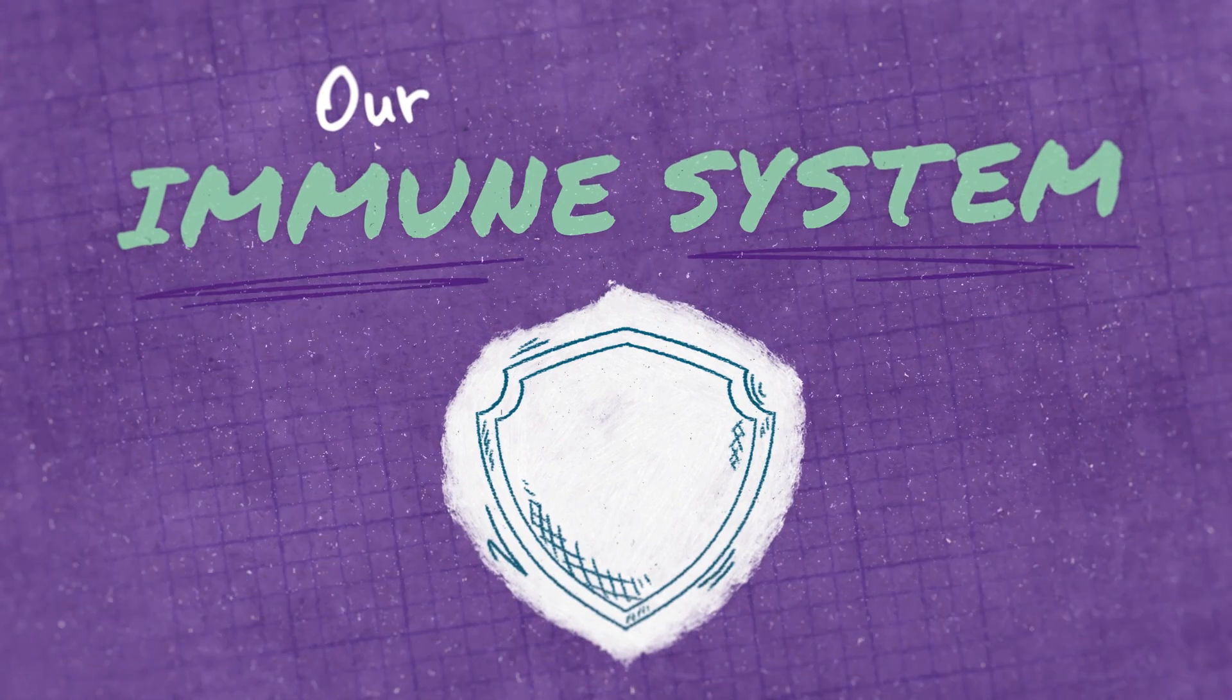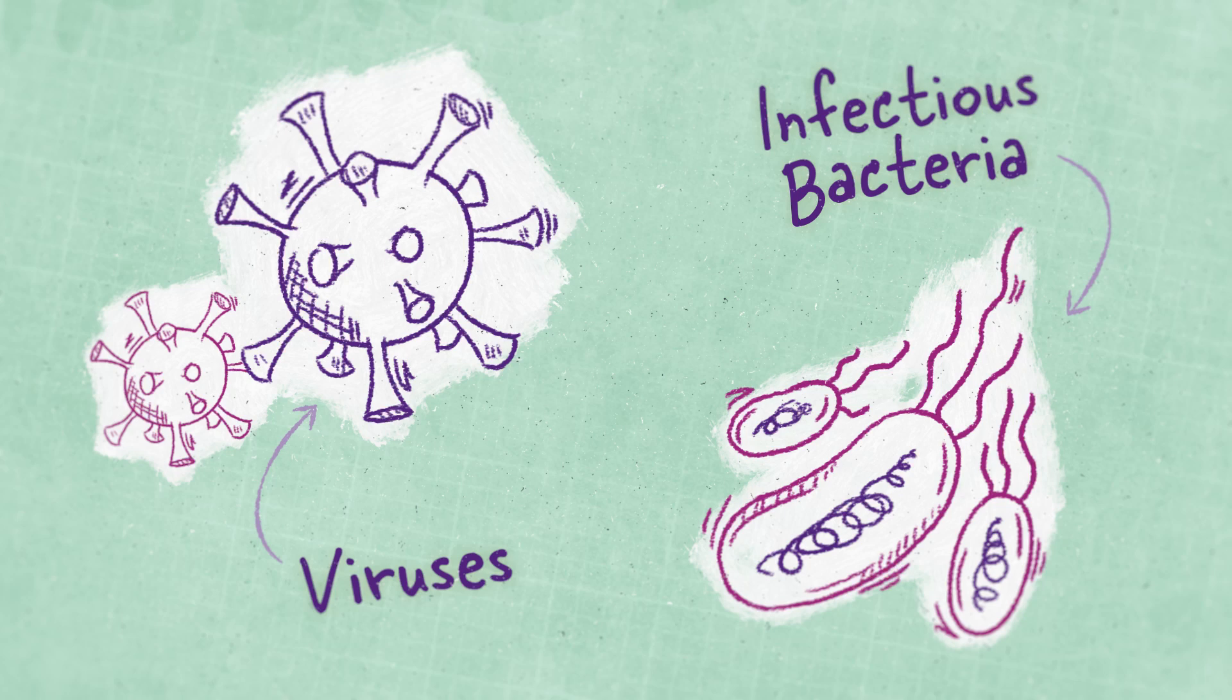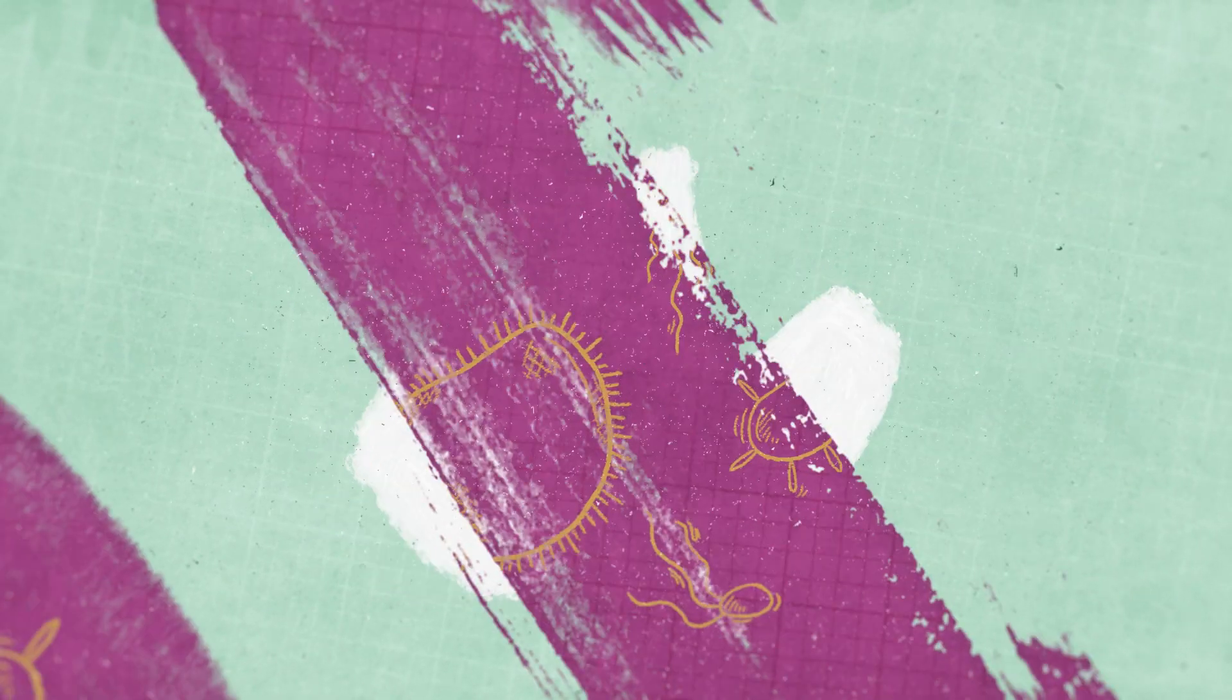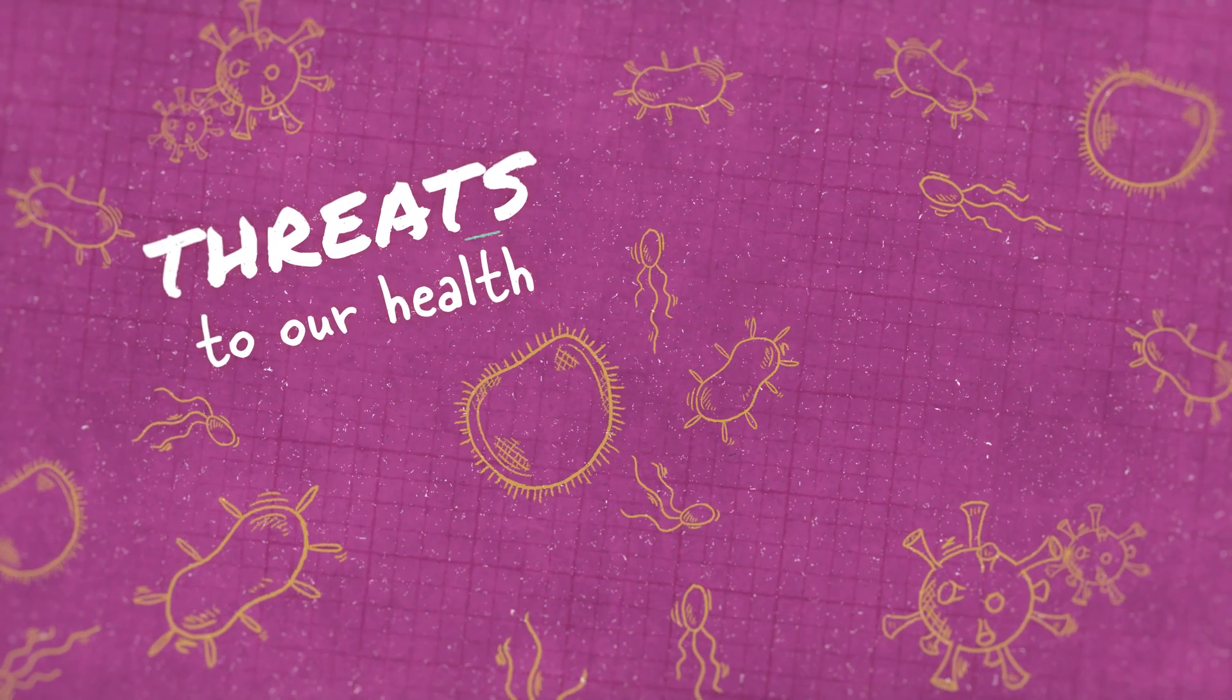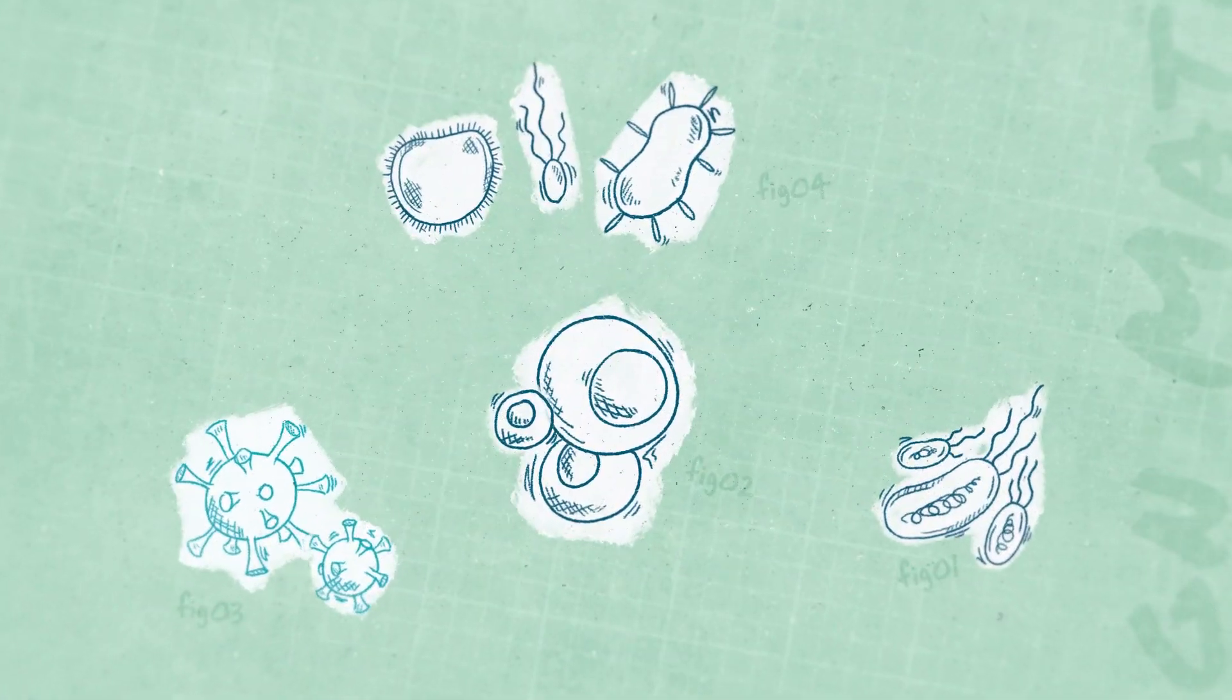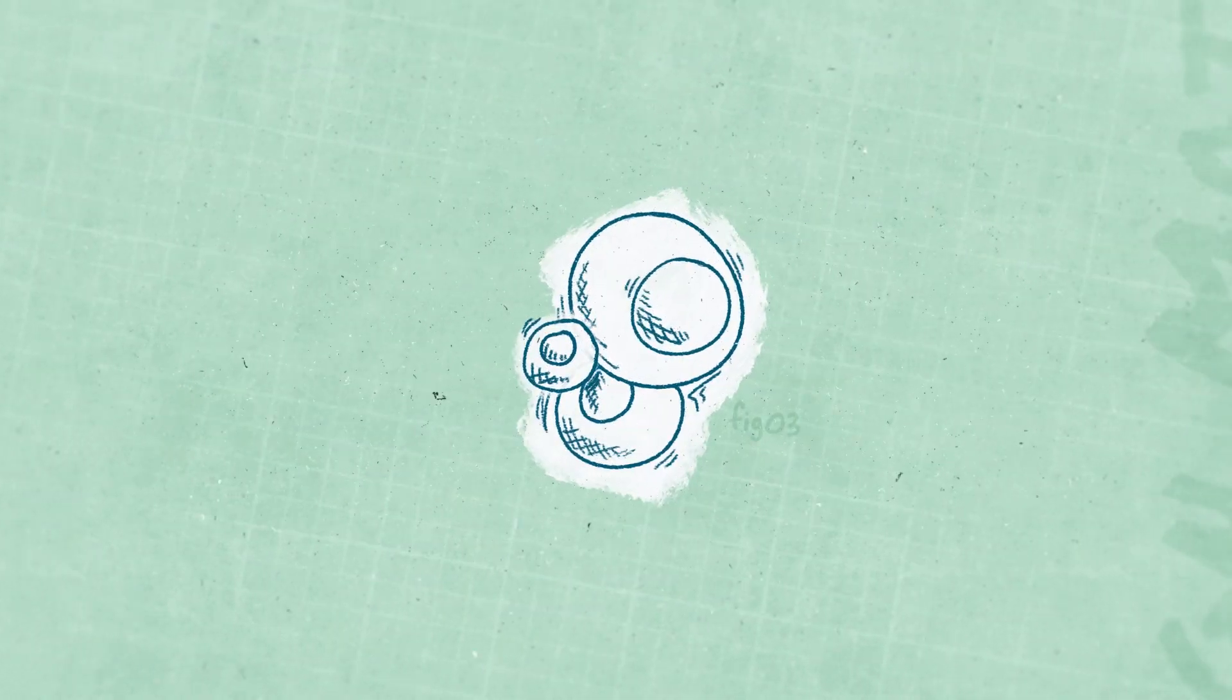Our immune systems are responsible for watching out for foreign invaders, such as viruses or infectious bacteria, foreign cells or material, any foreign bodies that could pose threats to our health. But our immune system sees foreign material as a threat, even when it may be a good thing, like an organ transplant or cells for cell therapy.